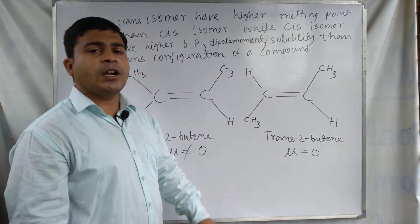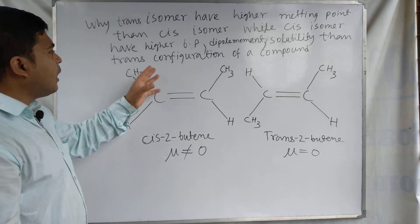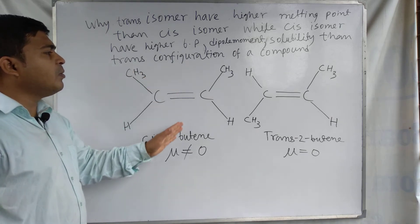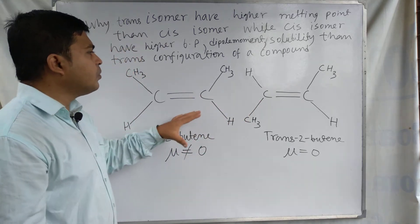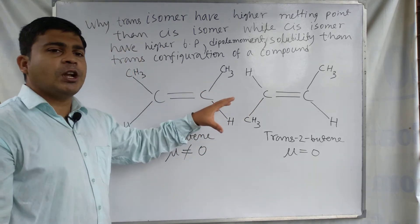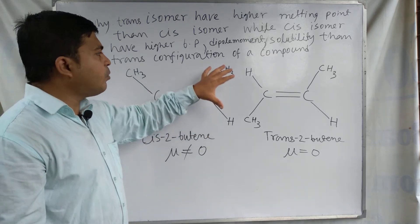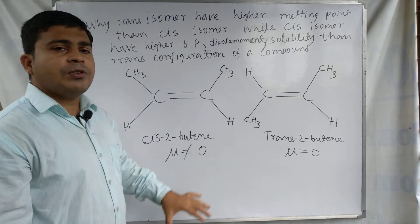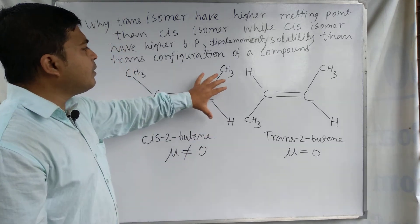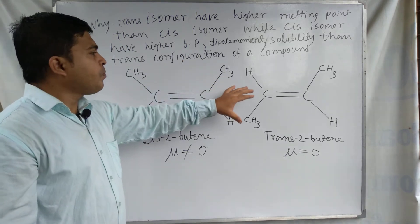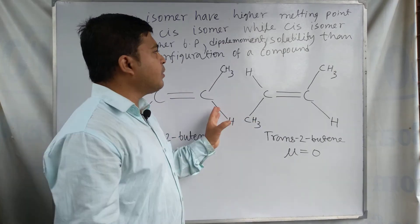In the case of the trans isomer, the two methyl groups are on opposite sides and it has a very symmetrical shape, so it has a higher melting point. But in the case of the cis isomer, the two methyl groups are on the same side and there is poor symmetry. Due to the poor symmetry, the cis molecule does not fit in the crystal lattice well, and for this reason the cis compound has a lower melting point than the trans isomer.